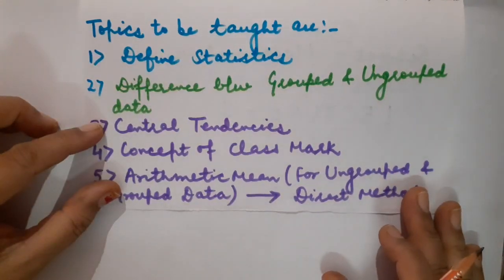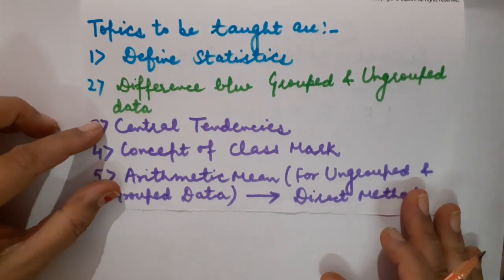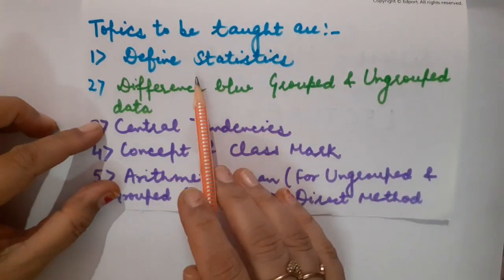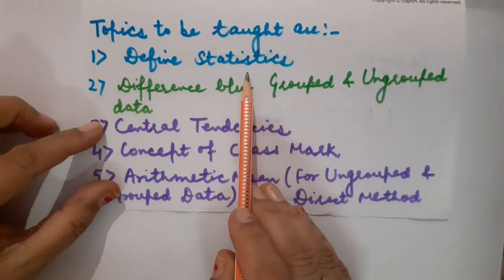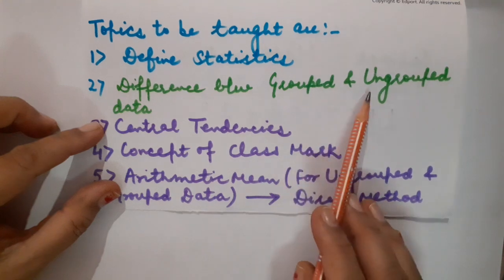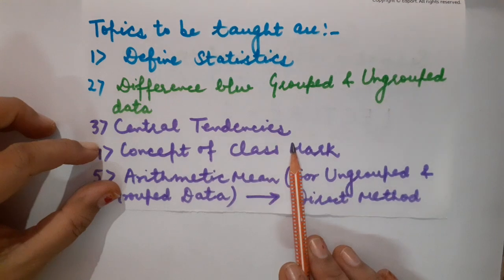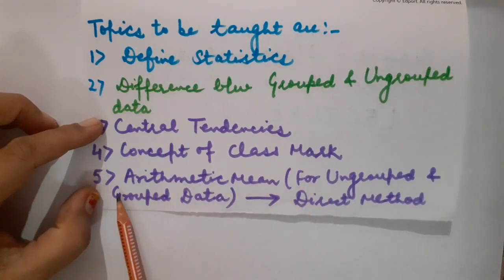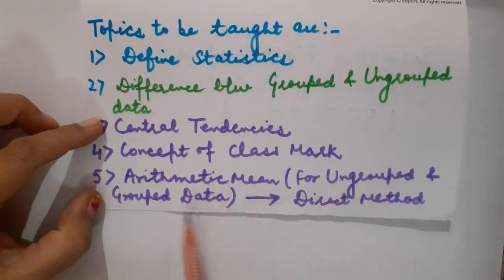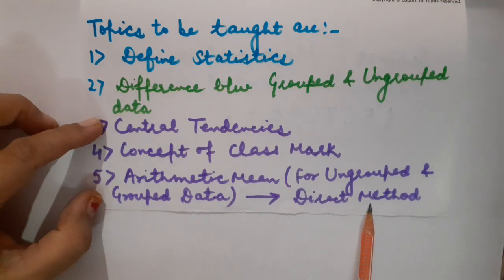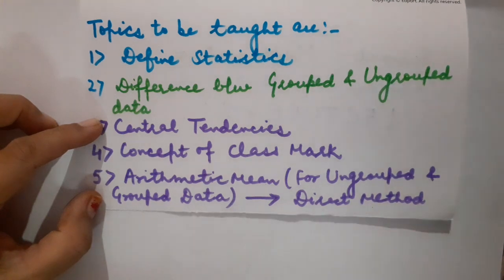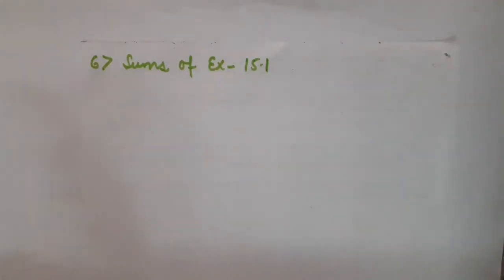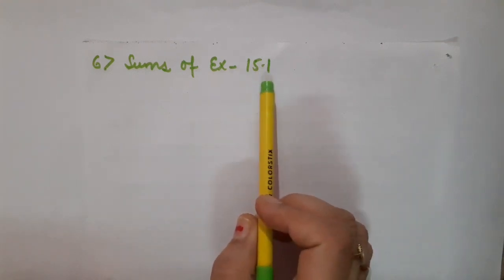This chapter is not new for you; you have learnt it in your previous classes also. The topics I am going to teach today are: first, the definition of statistics; second, the difference between grouped and ungrouped data; then central tendencies; then the concept of class mark; then arithmetic mean for ungrouped as well as grouped data. One method of calculating arithmetic mean will be introduced today — the direct method. At the end, I will explain a few sums from exercise 14.1 on how to calculate mean using the direct method.